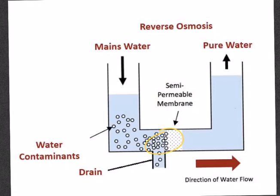RO is used both in industrial processes as well as in the production of potable water. The result of this process is that the solute is retained on the pressurized side of the membrane, whereas the pure solvent is allowed to pass to the other side.